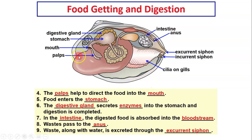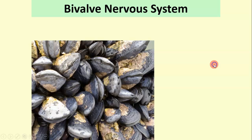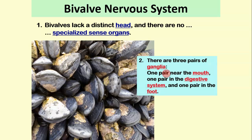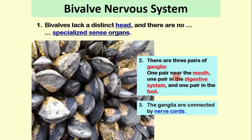All of those internal parts make up the visceral mass — and that's actually what we eat when we eat clams, oysters, and mussels. As for their nervous system, bivalves lack a distinct head and have no specialized sense organs, but they do have three pairs of ganglia — nerve bundles. One pair is near the mouth, one pair is in the digestive system, and one pair is in the foot. All three pairs of ganglia are connected by a nerve cord, and they act together to form a primitive nervous system.